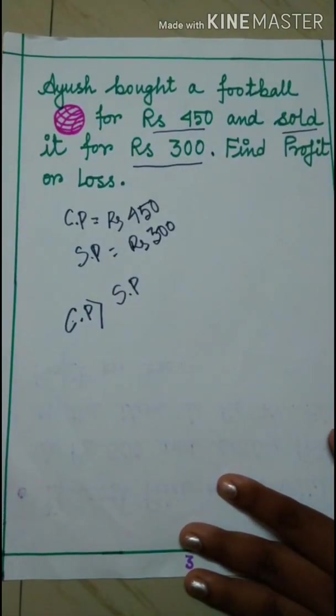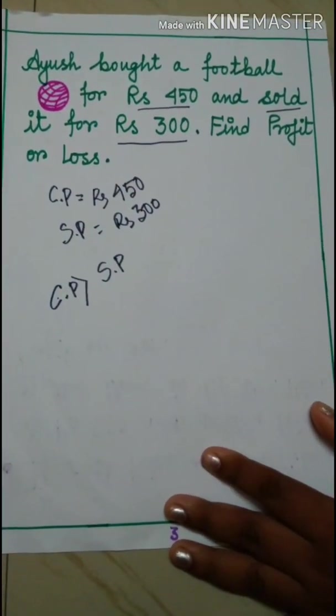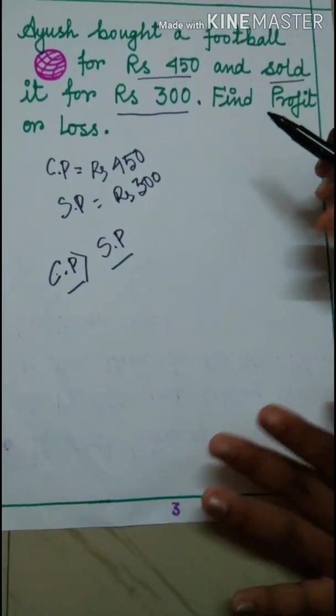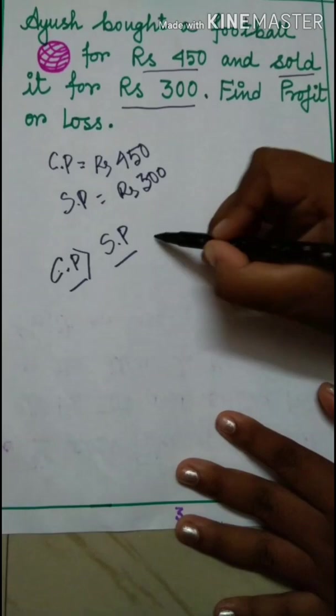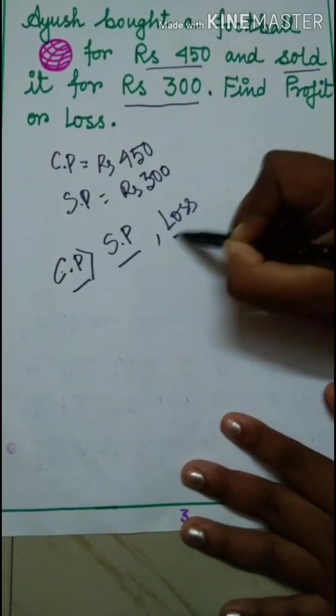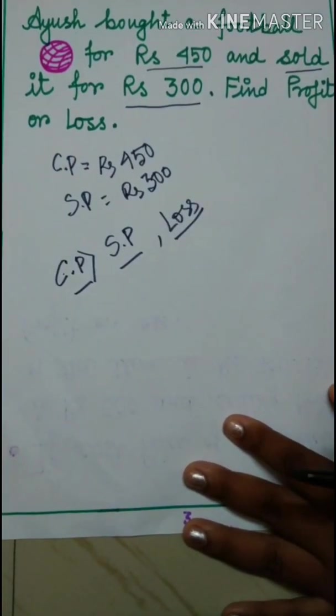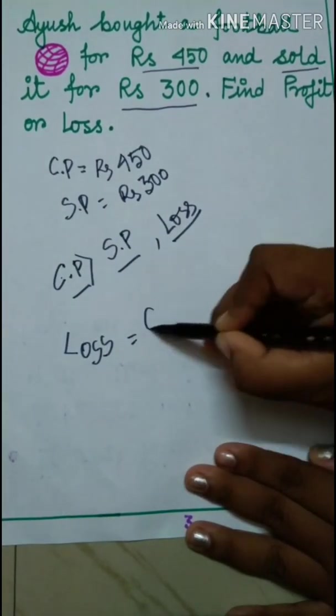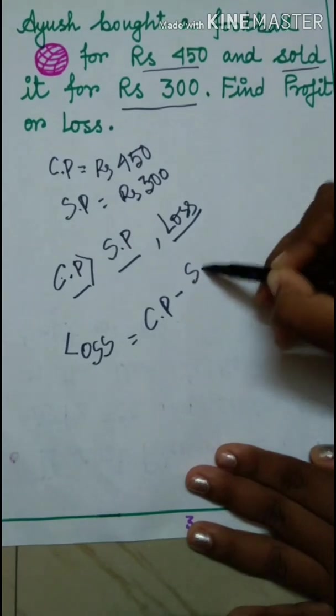That means cost price is greater than selling price. And whenever cost price will be greater than selling price, that time it will be loss. So it becomes a loss for Ayush.